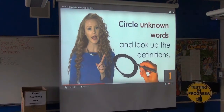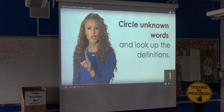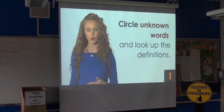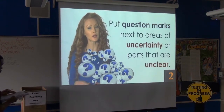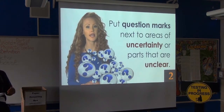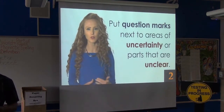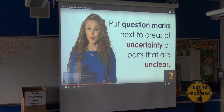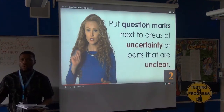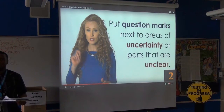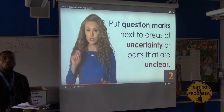Number two: use question marks to indicate areas of uncertainty. Anytime you're reading and a question is raised — what does the author mean, why did the character do this, why did this take place in history — use a question mark. Just like a map legend helps you understand different symbols, your annotations will have certain symbols unique to you.